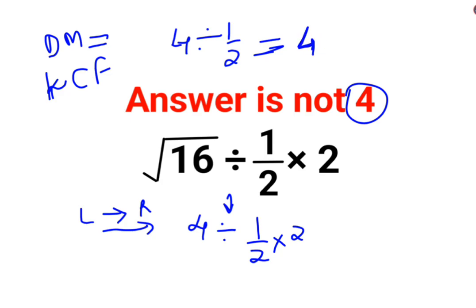And C stands for changing the division sign to multiplication and F stands for flipping or taking reciprocal of the fraction. 1 upon 2 becomes 2.